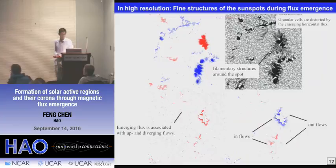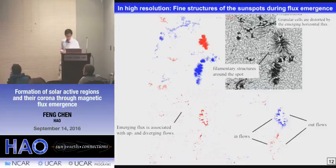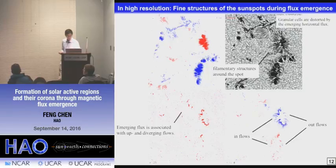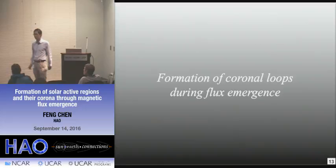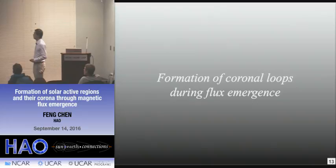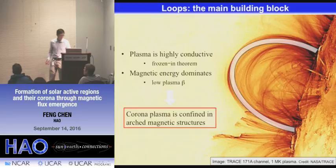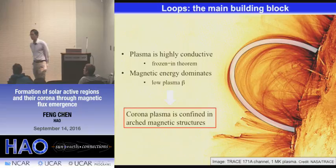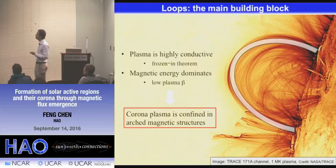This brings us to the end of the emergence of the magnetic flux to the surface. But the magnetic field doesn't stop here — it will further expand into the corona. In the following, I will show the formation of coronal loops as a result of magnetic flux emergence. Before we go to flux emergence, a very brief introduction to coronal loops: when we talk about structure in the corona, we are usually referring to coronal loops, which are the main building blocks. They appear like loops because the plasma in the corona is highly conductive, so they are frozen in the magnetic field lines, and the magnetic energy dominates over the plasma energy, meaning the plasma must follow the shape of the magnetic field line.